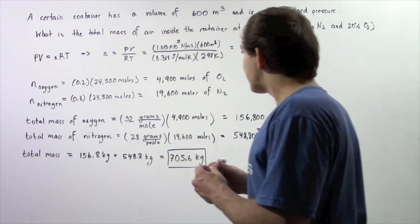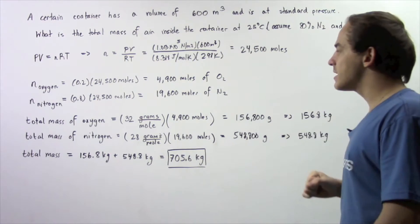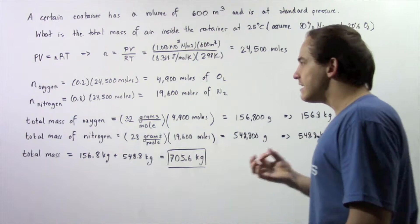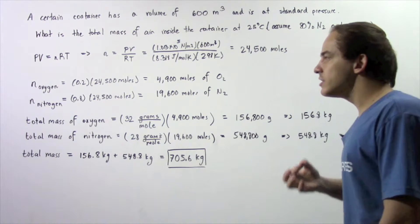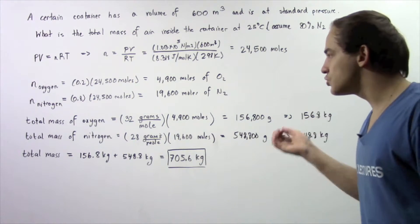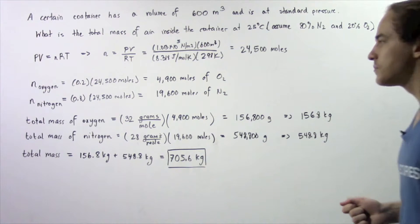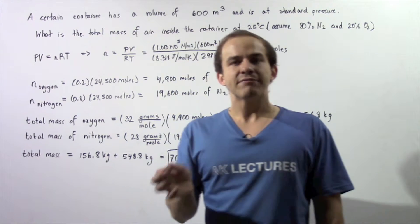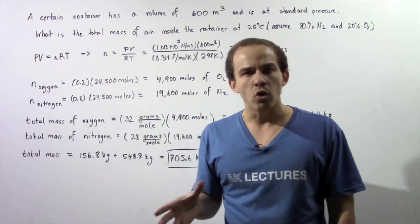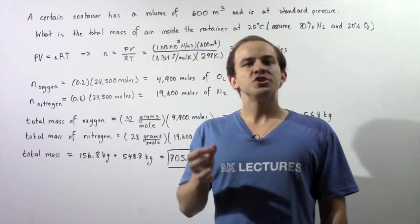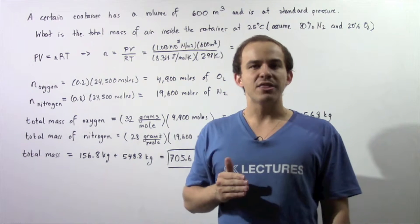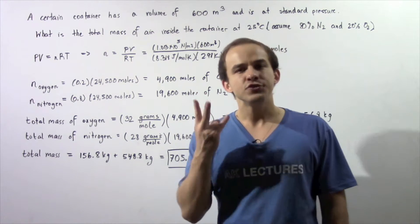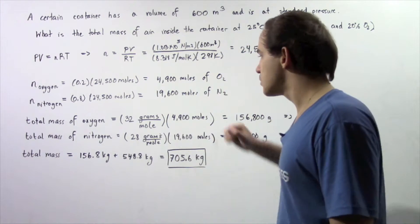Now, notice that we're dealing with diatomic oxygen and diatomic nitrogen. That means, if we want to calculate the total mass of our oxygen inside our system, we have to find, using the periodic table, the mass per mole of our oxygen, which is 16, and multiply that by 2. Because in diatomic oxygen, we have 2 oxygen atoms.